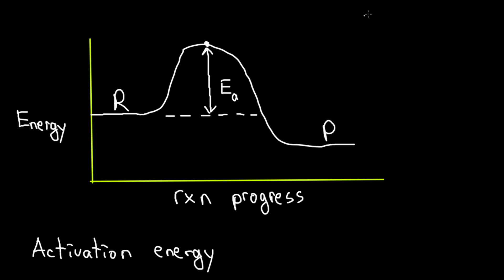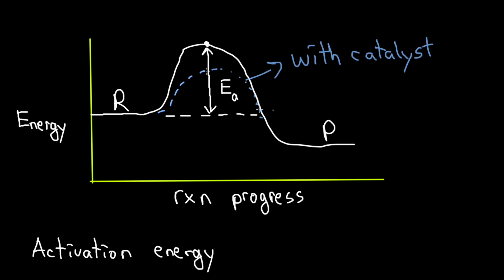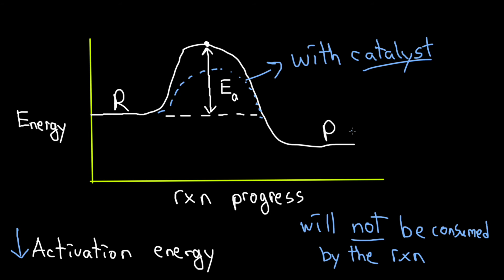What catalysts do is lower the activation energy, meaning the reaction will occur faster. This does not mean we produce more products or have fewer reactants — the concentrations of products and reactants do not change. The only thing that changes is the speed at which products form. Additionally, a catalyst is not consumed by the reaction: it may appear as a reactant in elementary steps, but it is regenerated at the end and is present both at the beginning and end of the reaction.